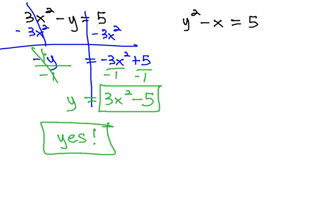So the question becomes, how could y equal more than one thing? Well, let's look at the second example, y squared minus x equals 5.